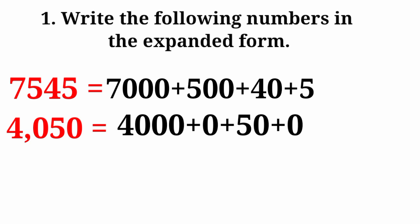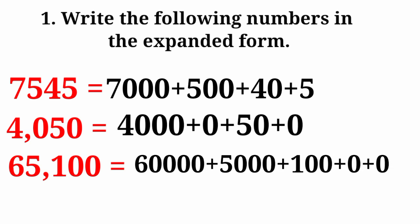Next number is 65,100. Expanded form: 60,000 plus 5,000 plus 100 plus 0 plus 0.